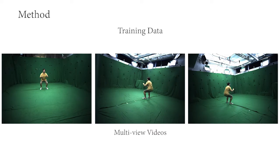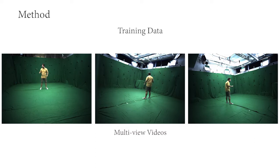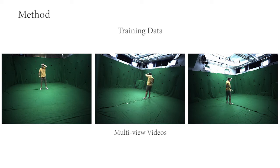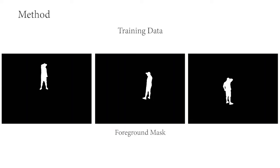Neural Actor learns the template-guided deformable neural radiance field from multi-view videos. As training data, we used two sequences from the DeepCap dataset, two sequences from the DynaCap dataset. In addition, we also captured four sequences in a multi-view green screen studio with calibrated cameras. Since we are only interested in foreground sensors, we use color keying to extract foreground in each image.